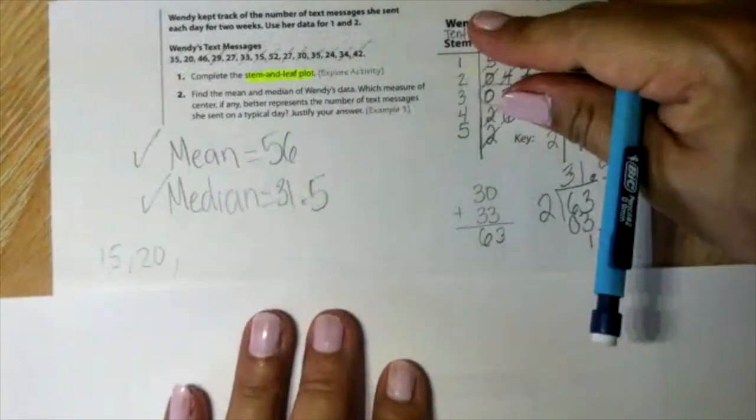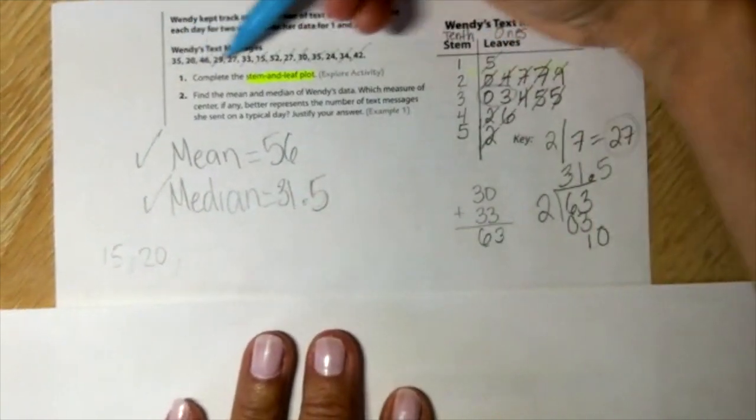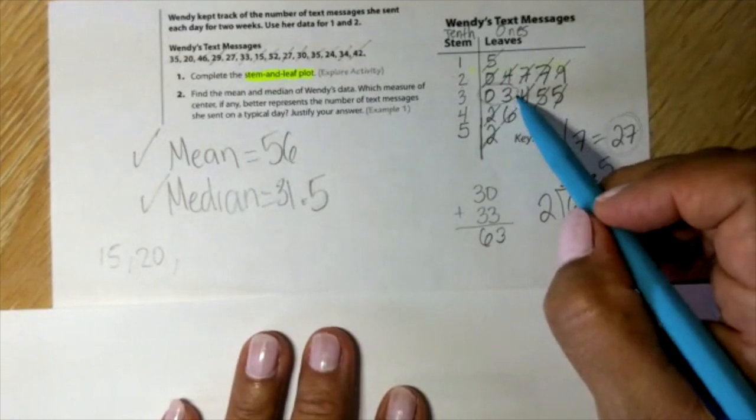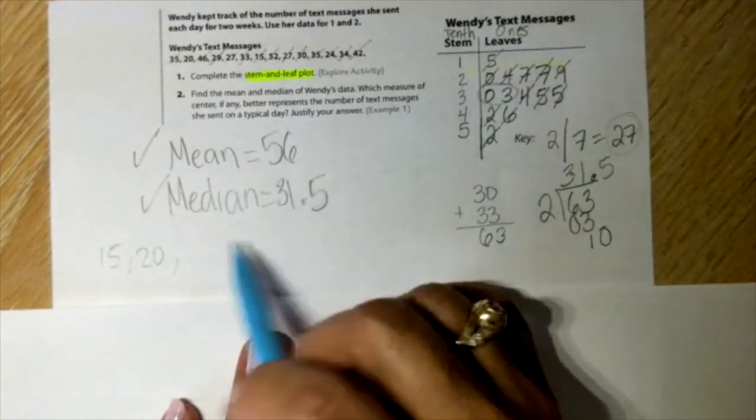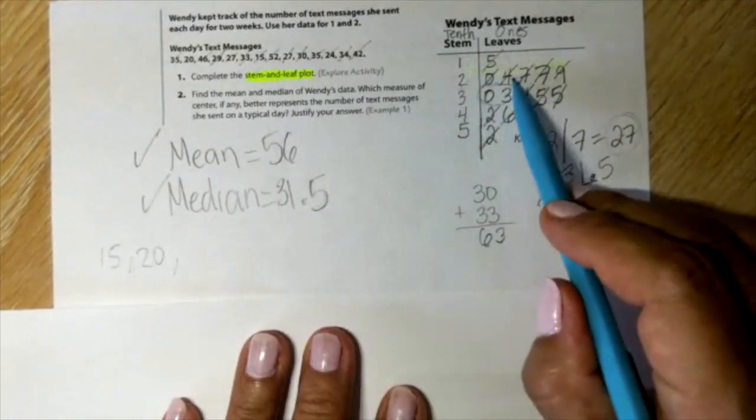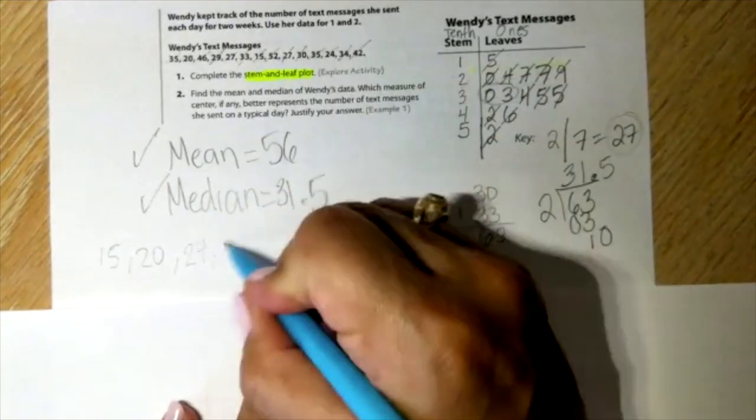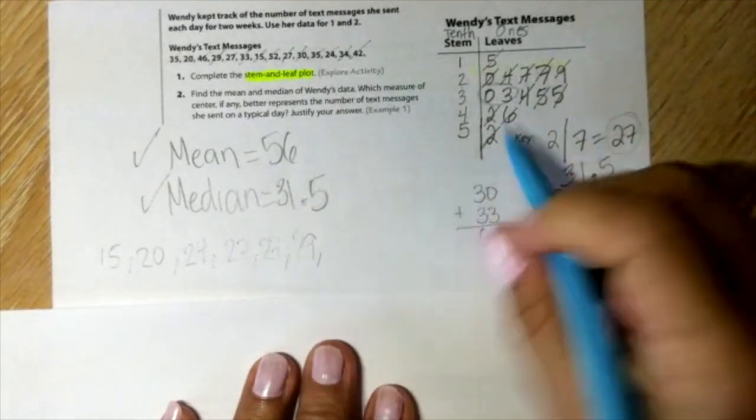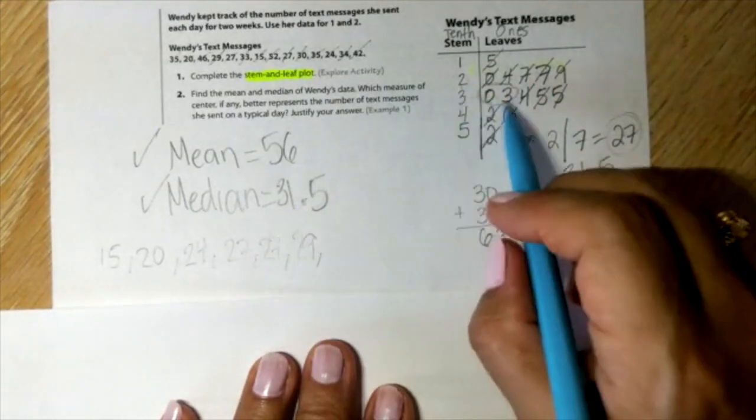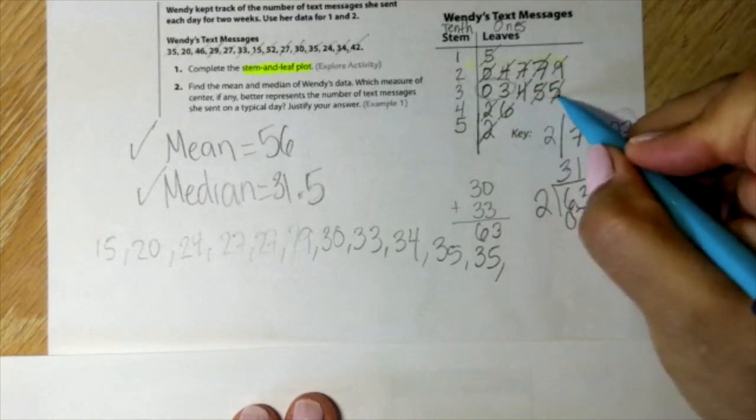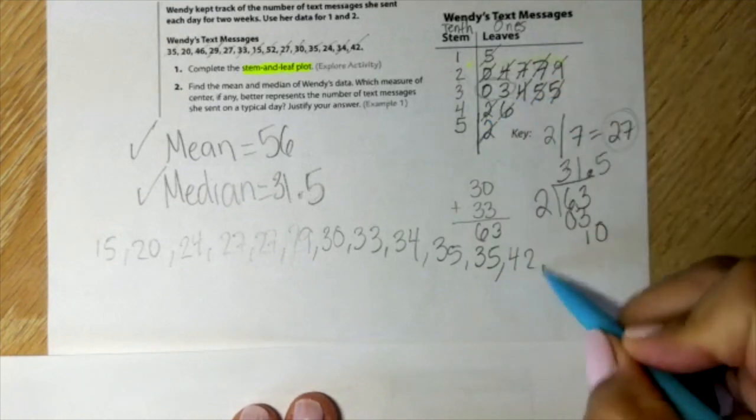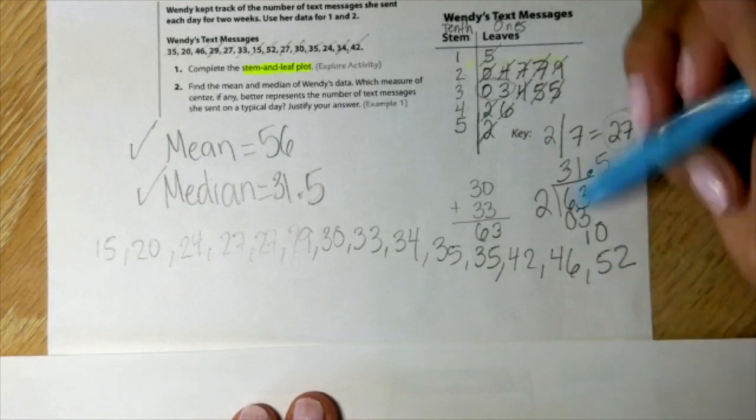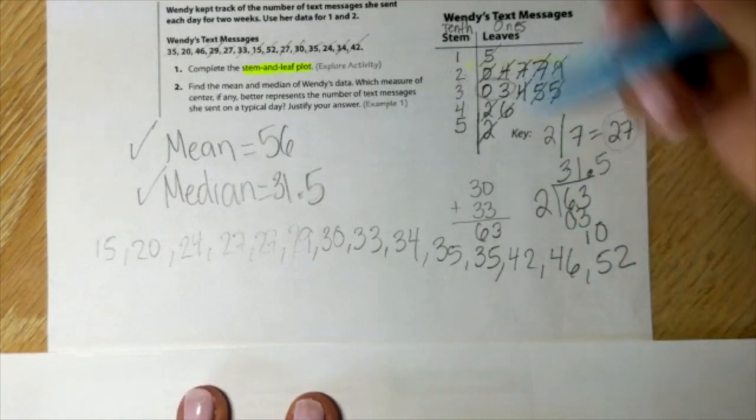You can also rewrite this data. This way is way easier since you already have them in order. So 15, 20, 24, 27, 27, 29, 30, 33, 34, 35, 35, then 42, 46, 52. They're in order, least to greatest.